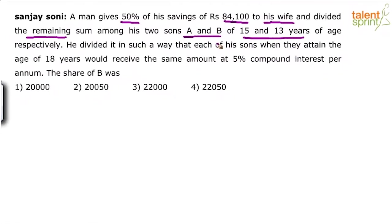A is 15 years old and B is 13 years old. He has divided this amount in such a way that each of his sons, when they become 18 years old — when they attain the age of 18 years — would receive the same amount at 5% compound interest per annum. Find the share of B is the question here.